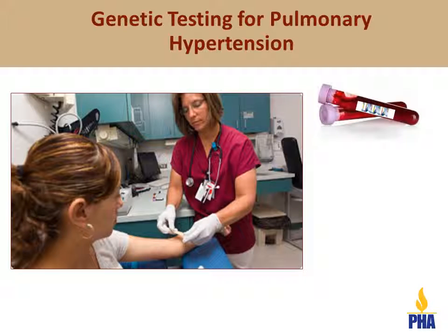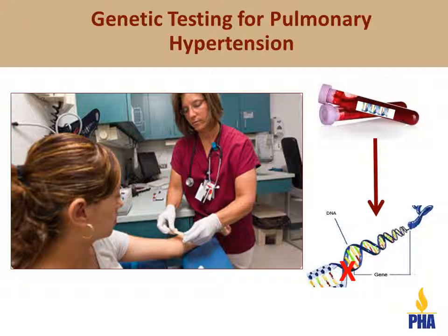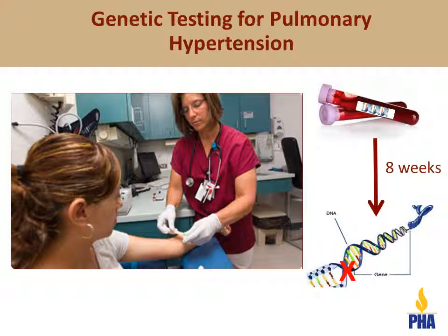We can test a small sample of blood to look for mutations in the BMPR2 gene and other pulmonary hypertension genes to try to identify the genetic cause. Genetic testing typically takes 8 weeks to complete. Testing is most likely to find the genetic mutation in a person with the disease. Therefore, we strongly recommend that someone who has pulmonary hypertension be the first person in the family to have genetic counseling and testing.